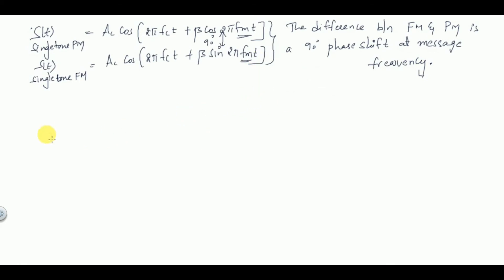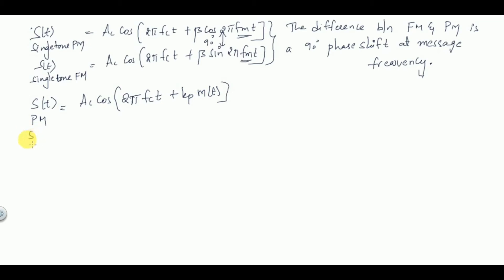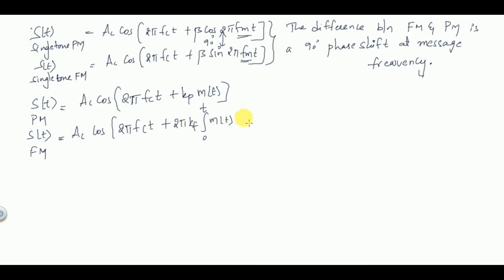The standard time-domain equation for PM is: s(t) of PM = Ac·cos(2π·fc·t + kp·m(t)). For FM it is: s(t) of FM = Ac·cos(2π·fc·t + 2π·kf·∫₀ᵗ m(t) dt). These are the standard time-domain equations for comparison.